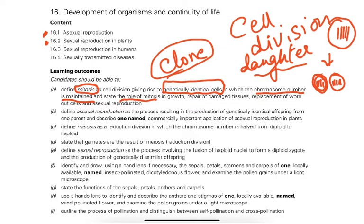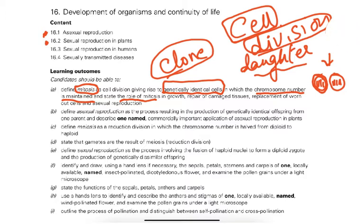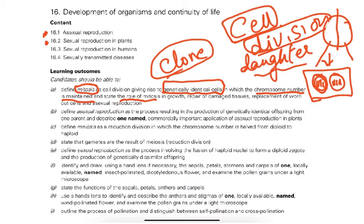The cells divide and the original cell finishes, giving us two daughter cells. Think of it like dividing an apple into two — except here the cell divides into two and forms two complete daughter cells, not two halves.